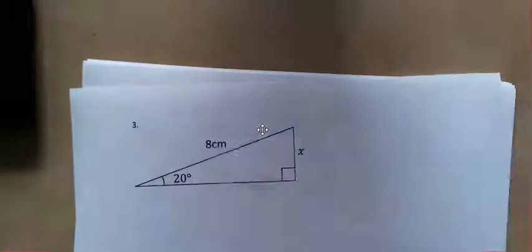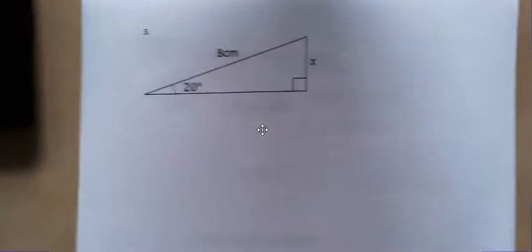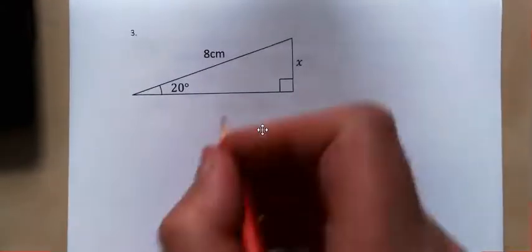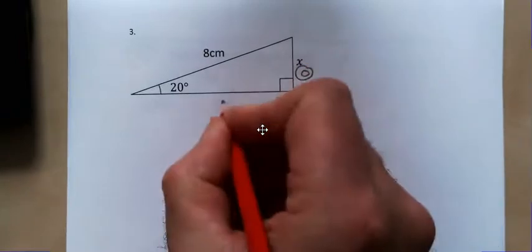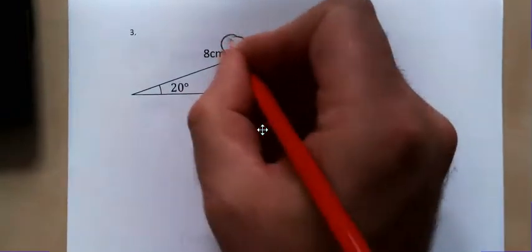Now our final example. I'm going to focus here if I can. And then we're going to label our sides. So this is o. This is a. And this is h.